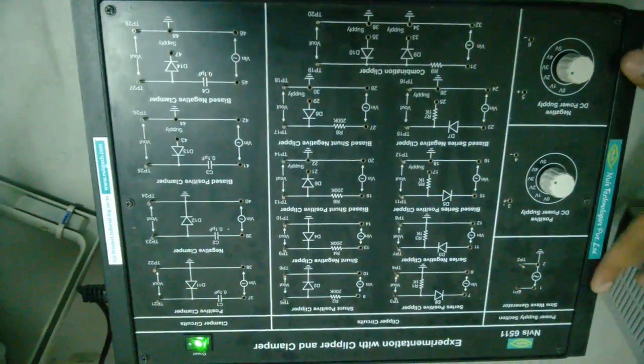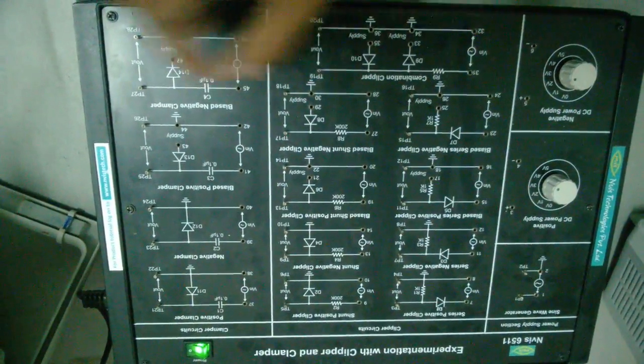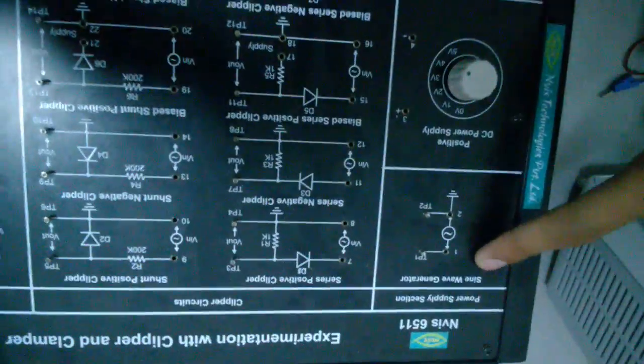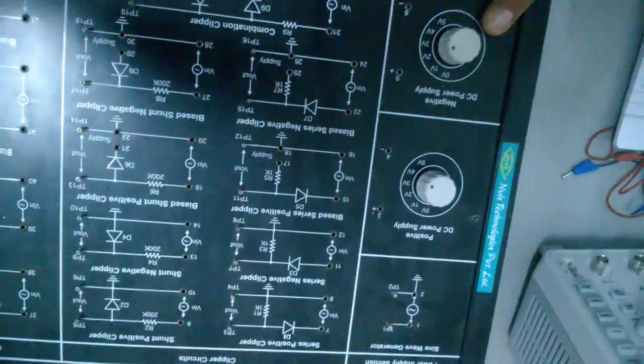Here we have a trainer board. These are the clipper circuits, these are the clamper circuits, and here I have the input signals: a sine wave generator, a positive DC supply, and a negative DC power supply.